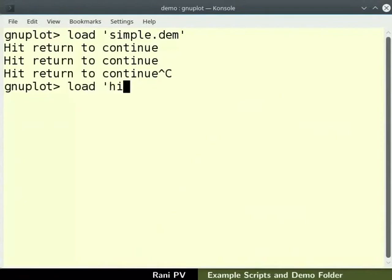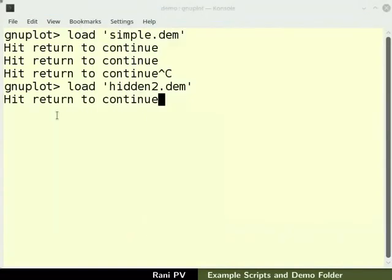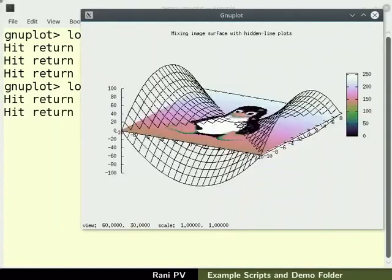Load the hidden2.dem file on the terminal. Use the command as shown before to load the script file. A graphics window opens. Go through the 3 examples of the 3d plots this script can generate.